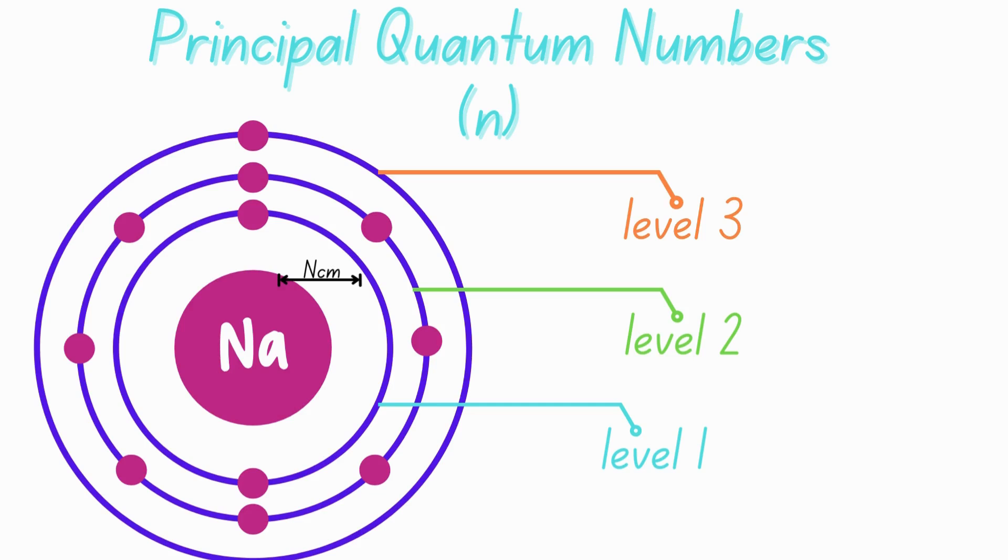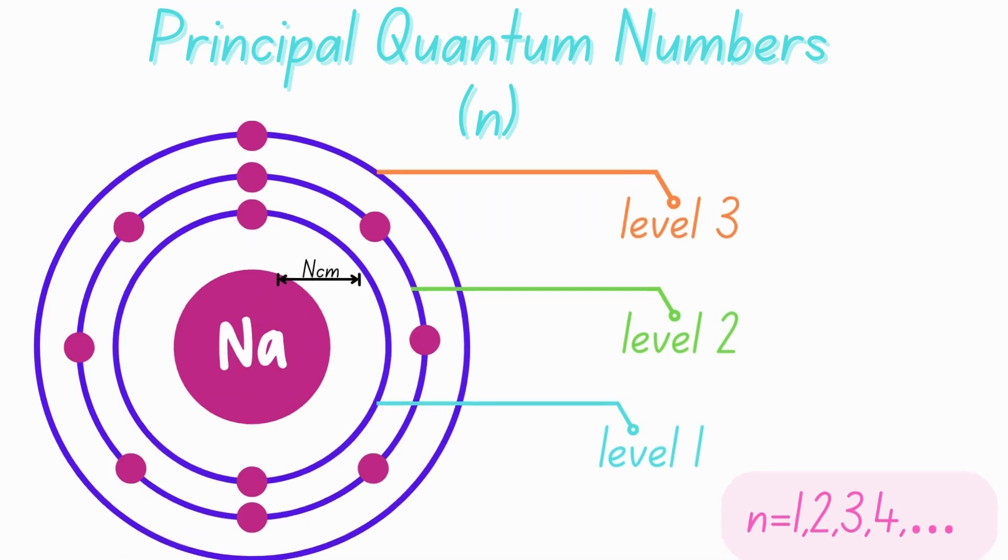The values of n can be any positive integer, so n can be equal to one, two, three, and so on. For its energy levels, higher n values correspond to higher energy levels and greater distances from the nucleus.